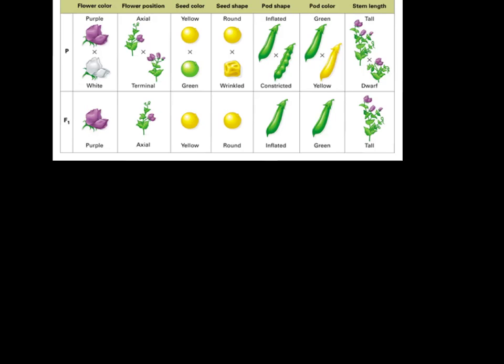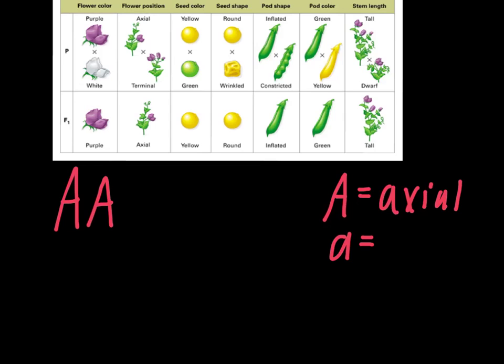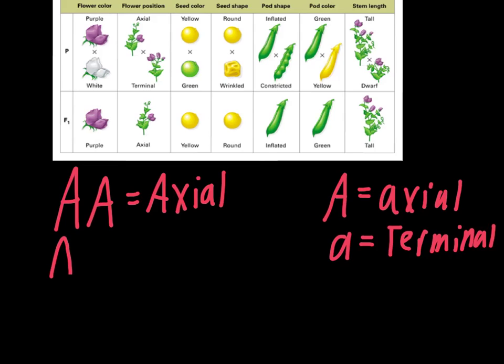What that means is there's technically two different ways to get axial. One way we could get it is if the individual gets an axial trait from both parents. Remember, in this case, capital A represents axial. And then if you've been following along, lowercase a is going to represent terminal. So capital A, capital A, that would equal an axial individual.